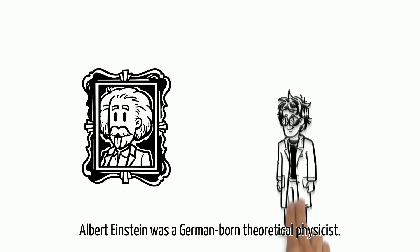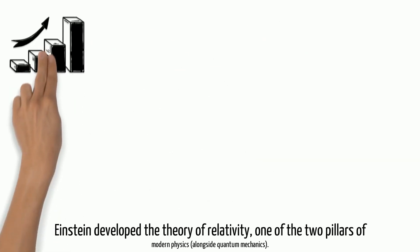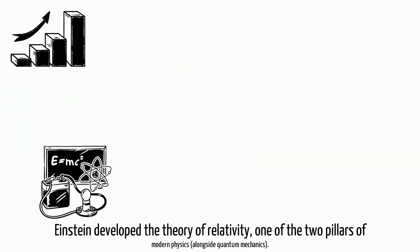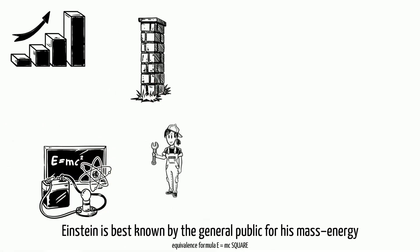Albert Einstein was a German-born theoretical physicist. Einstein developed the theory of relativity, one of the two pillars of modern physics, alongside quantum mechanics.